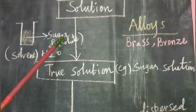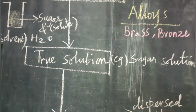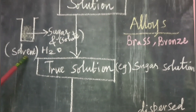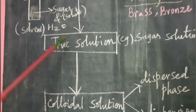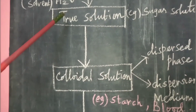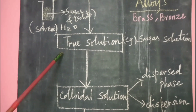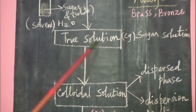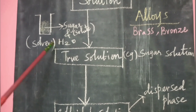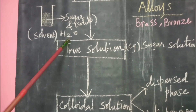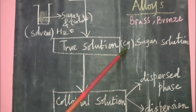The solute is the component present in lesser amount by weight, and the solvent is the component present in higher amount by weight. A true solution is a homogeneous mixture where small solute particles are dissolved in a solvent. The best example is sugar in water or salt in water — the small sugar particles are dissolved in the solvent water, forming a true solution.